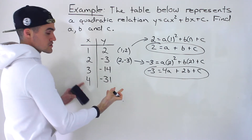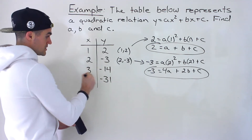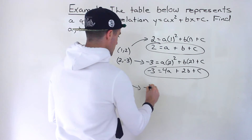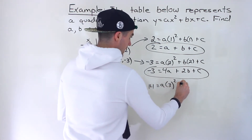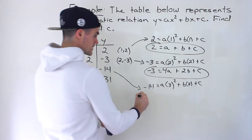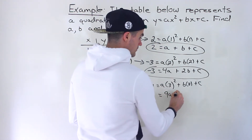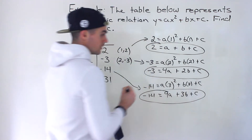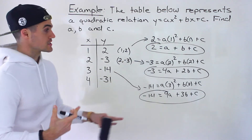We only need three equations since we're solving for three unknowns, so I'm going to pick the point 3 and negative 14. We plug in negative 14 for y, and plug in 3 for all the x values. 3 squared is 9 times a, so we'd have negative 14 equals 9a plus 3b plus c. Now we have three equations and three unknowns.